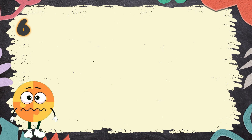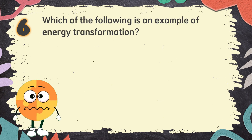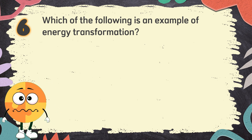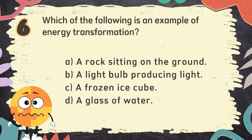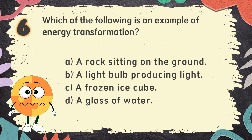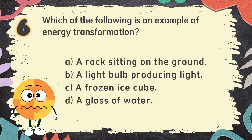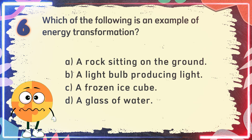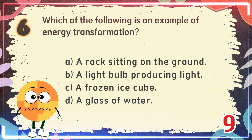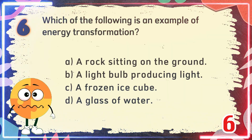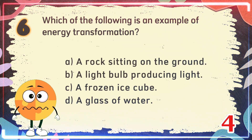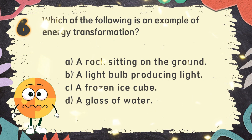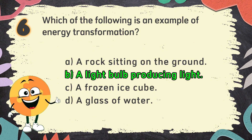Number 6: Which of the following is an example of energy transformation? The choices are: A. A rock sitting on the ground, B. A light bulb producing light, C. A frozen ice cube, D. A glass of water. The correct answer is B. A light bulb producing light.